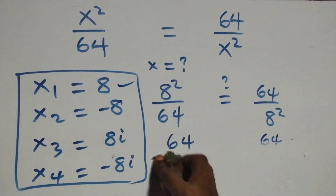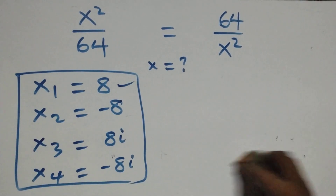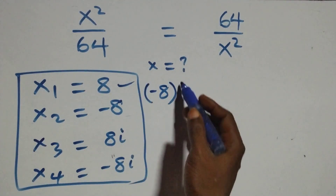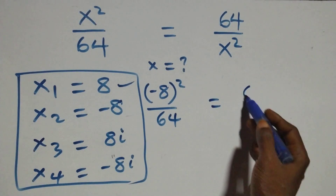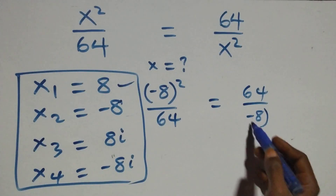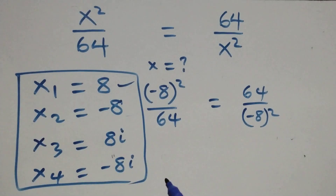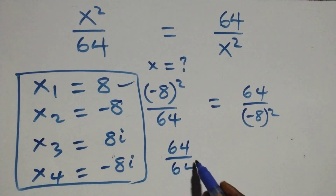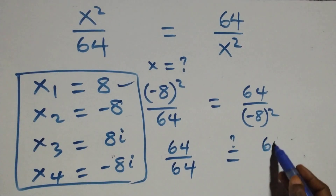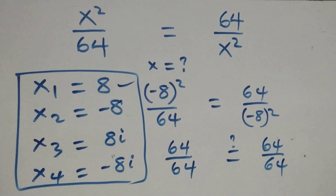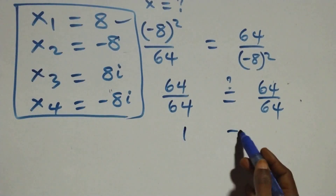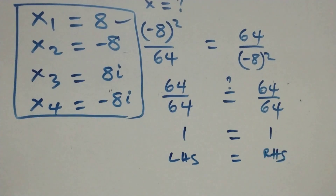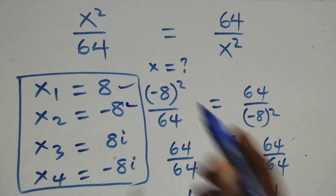Now substituting x equals minus 8: the equation becomes (minus 8) squared over 64 equals 64 over (minus 8) squared. Since (minus 8) squared equals positive 64, we have 64 over 64 equals 64 over 64, which gives 1 equals 1. Left-hand side equals right-hand side, so x equals minus 8 also satisfies the given problem.